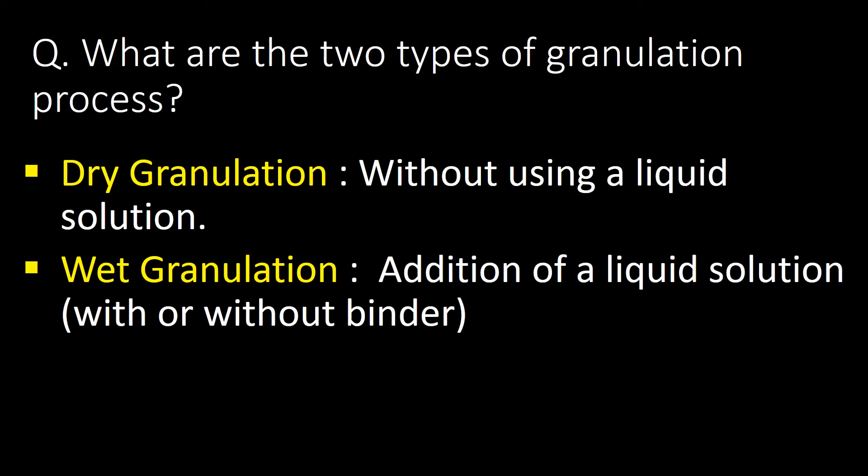What are the two types of granulation process? The first type is dry granulation, which is done without using a liquid solution. The second type is wet granulation, which is done with the addition of a liquid solution with or without a binder.